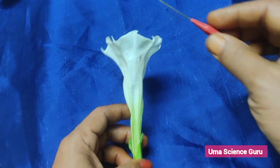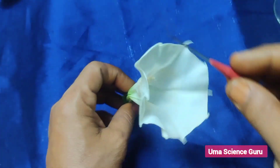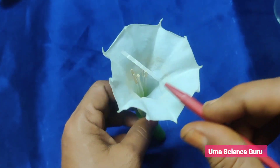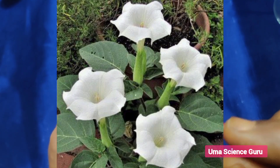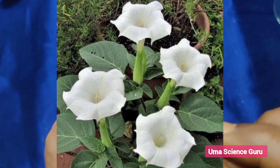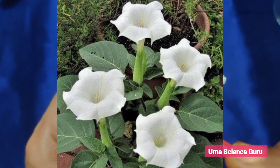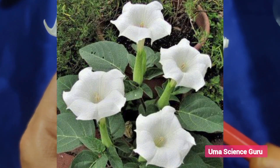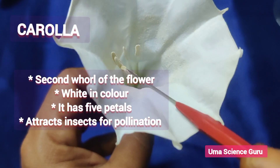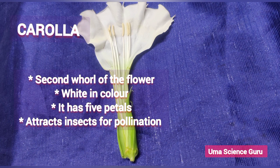Students, observe the white or brightly colored structures — they are called petals, collectively called the corolla. It is the second whorl of the flower, white in color, and has five petals. It attracts insects for pollination.